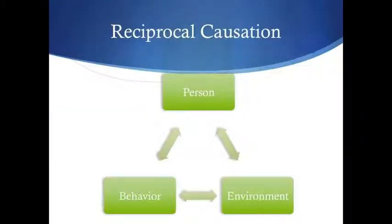Another idea of social cognitive theory, which is one of the five key assumptions, is this idea of reciprocal causation. You can see in this graphic that reciprocal causation is the influence of a person, an individual, on his or her environment and on his or her behavior. Behavior influences a person, and a person's behavior can influence their environment. And the same for environment, which can influence a person and a person's behavior.